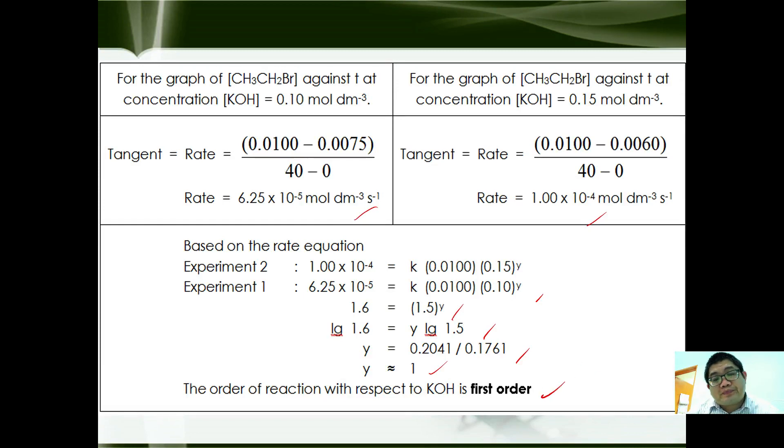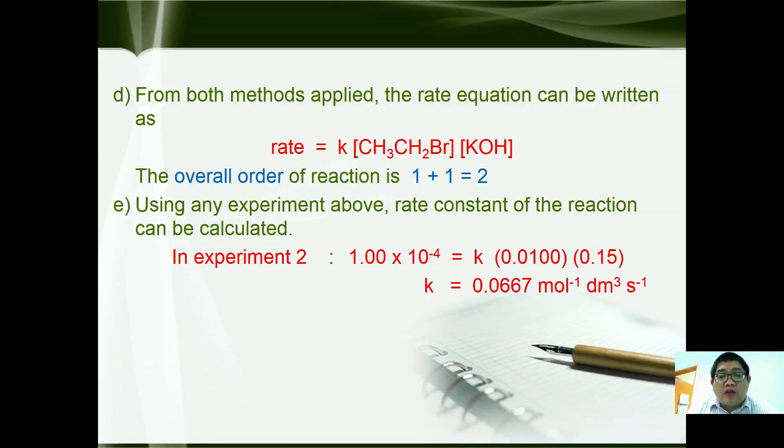From both methods applied, the rate equation can be written as rate = k[CH₃CH₂Br][KOH]. The overall order of reaction is 1 + 1 = 2. Using any experiment above, rate constant of the reaction can be calculated. In experiment 2, 1.00 × 10⁻⁴ = k(0.0100)(0.15). k = 0.0667 mol⁻¹ dm³ s⁻¹.